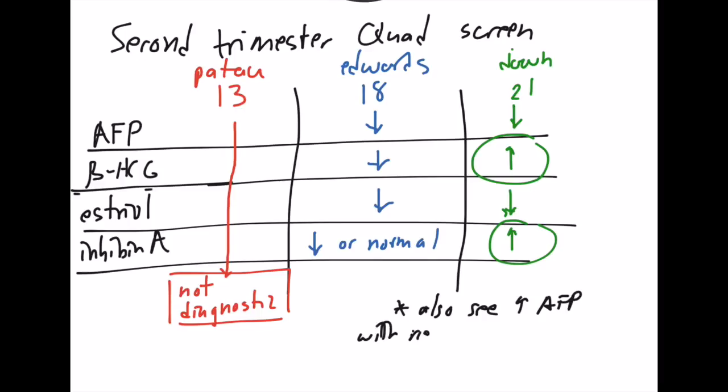Remember, Down always has this increased beta HCG. This is an interesting point to note: you have increased alpha-fetoprotein when you have defects of the gut or the neural tube. A few defects of the gut would be gastroschisis or omphalocele. So remember that.